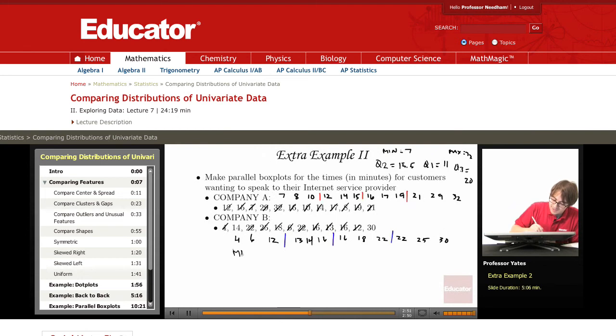So getting the 5 number summary for these data, we have the minimum is 4, Q1 is going to be 12.5, Q2 is going to be 16, Q3 is going to be 22, and the maximum is going to be 30.